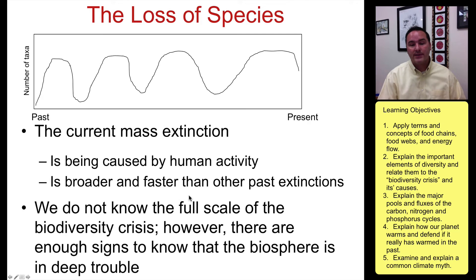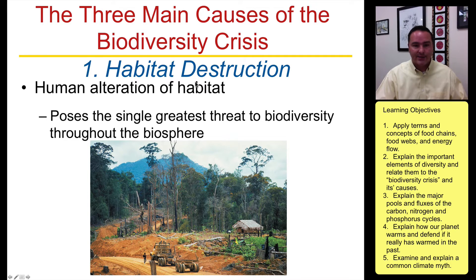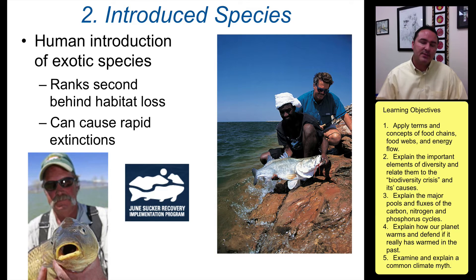We don't know the full scale of this crisis yet, but there are enough signs to know that the biosphere is probably in big trouble. The three main causes of the biodiversity crisis are: number one, habitat destruction — by far the biggest single threat to biodiversity. Number two, introduced species — exotic species introduced into new areas tend to out-compete native species, changing the entire community structure.